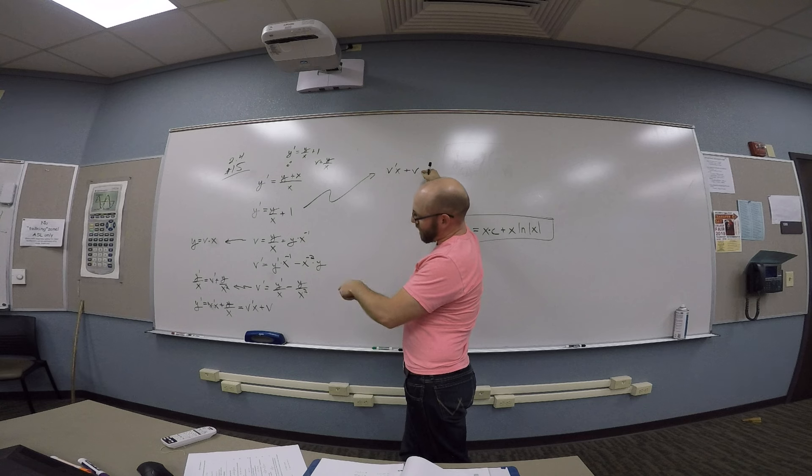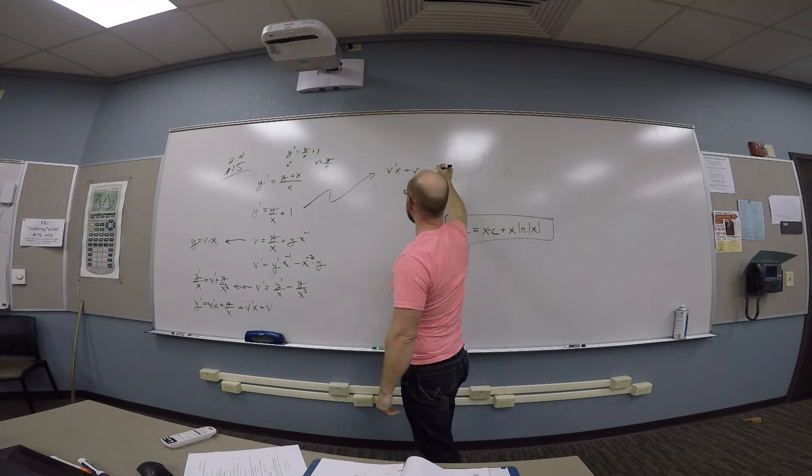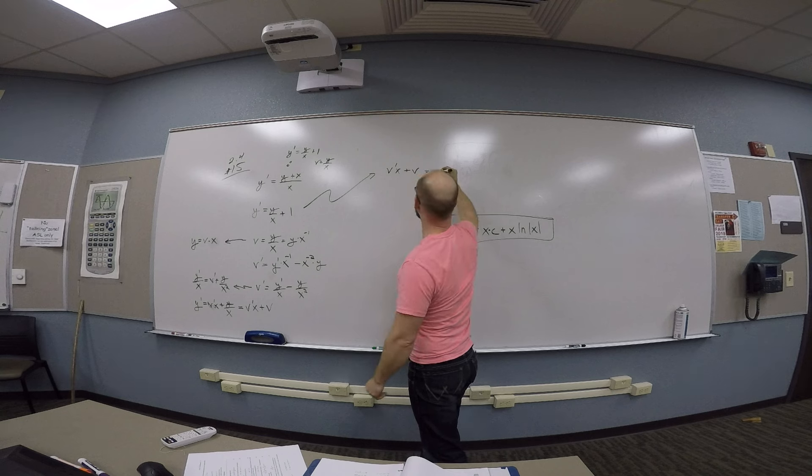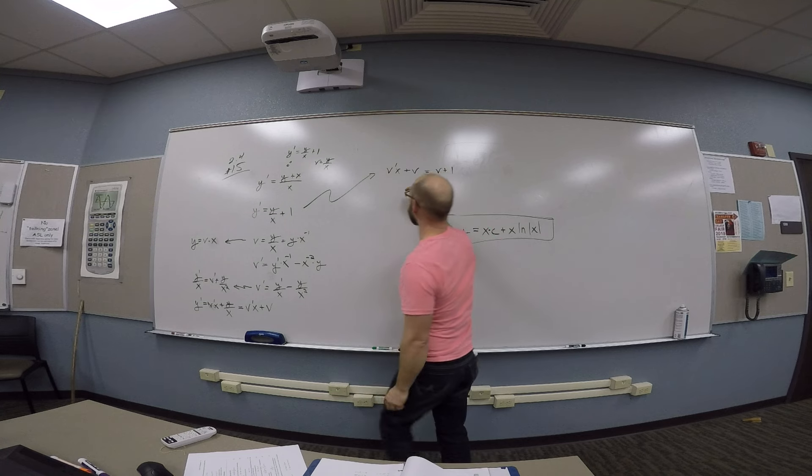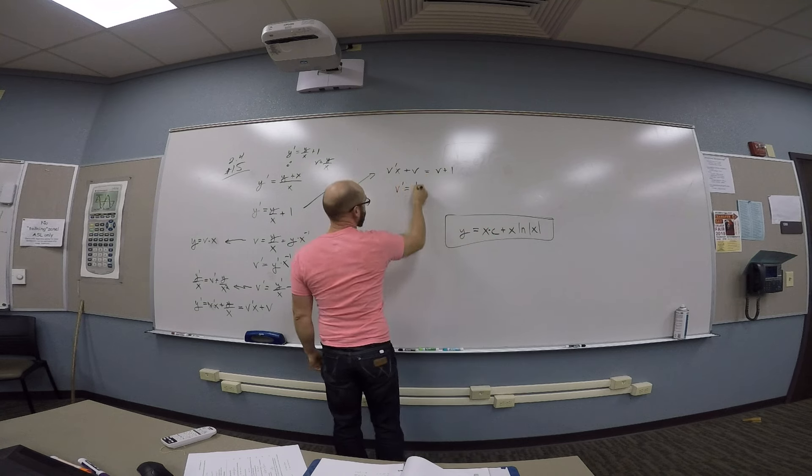So I got v prime, or vx plus v. That was my y prime. And that's supposed to equal y over x is v plus 1. And then something cancels, and I get v prime is 1 over x again.